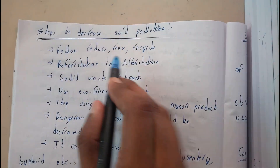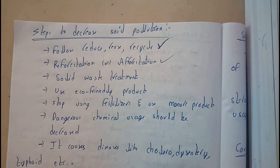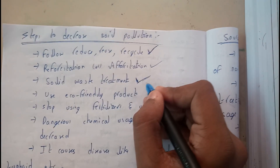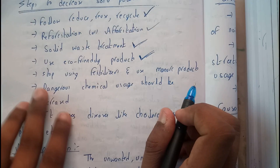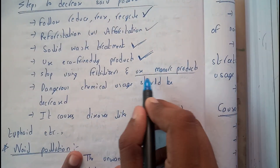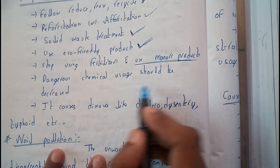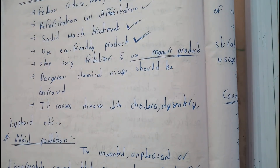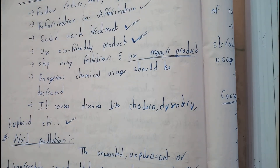To reduce soil pollution: follow reduce, reuse, recycle; practice afforestation; implement soil waste treatment methods to purify soil waste; use eco-friendly products; stop using chemical fertilizers and use manure products instead; and decrease dangerous chemical usage, as these can cause diseases like cholera. In the next tutorial, let's see all about noise pollution. Thank you for watching.